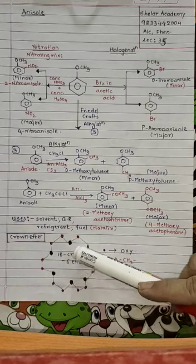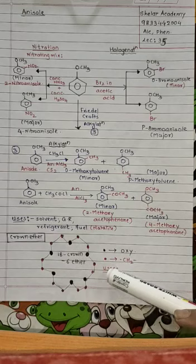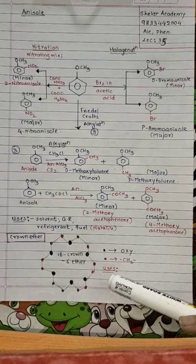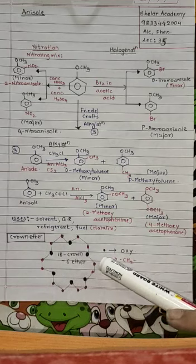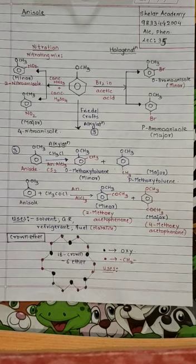So oxygen atoms are six: one, two, three, four, five, six. And the CH2 groups are twelve: one, two, three, four, five, six, seven, eight, nine, ten, eleven, twelve. Twelve plus six is eighteen. So accordingly the name of the ether is given: eighteen crown six. That is the crown ether.